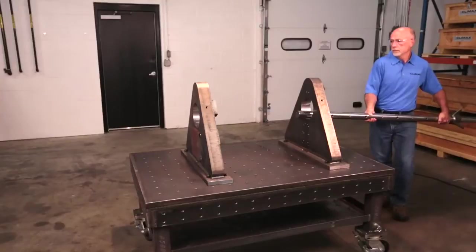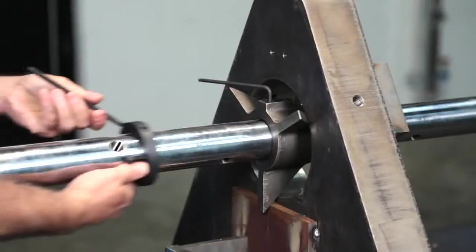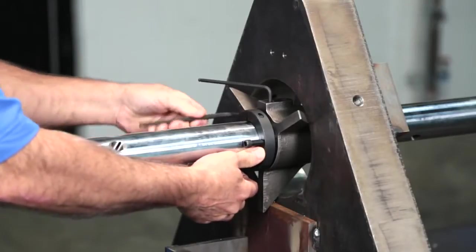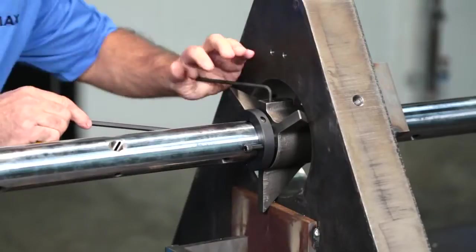Slide the bar through the holes to be bored and roughly center it with the setup cones. The setup cones are forced into the bore with the clamp ring jacking screw and locked onto the bar.